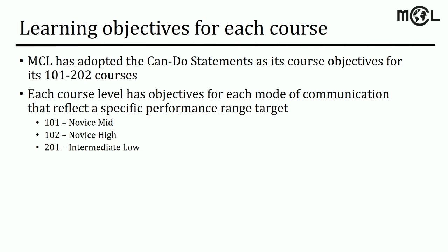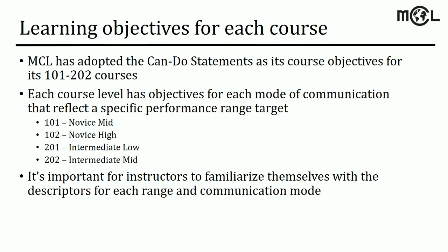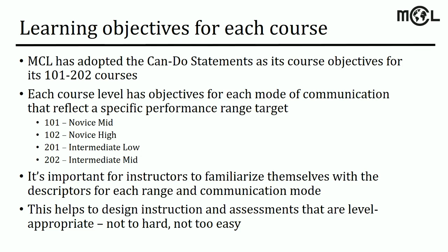For Spanish 201, the target is intermediate low, the next level up. And for Spanish 202, we have the ambitious target of intermediate mid. It's important that you familiarize yourself with the descriptors for each range and communication mode — so that when someone says a student can't engage in presentational writing at the novice high level, we all know what that means. Using these can-do statements as objectives helps us design instruction and assessments that are appropriate — not too hard or too easy. I'll sometimes walk by a Spanish 101 classroom and hear an instructor asking students to produce something way beyond novice mid, maybe at an intermediate or advanced level. These targets help us maintain realistic expectations.